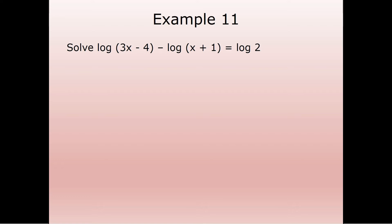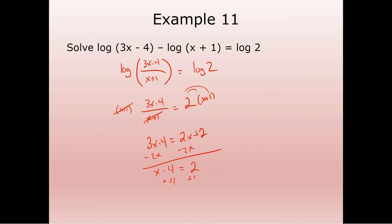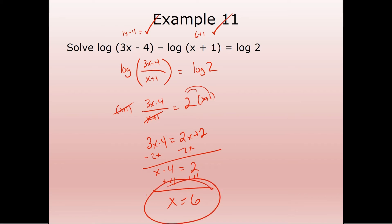Here we still have all logs, but three of them, so we need to rewrite this in terms of one single log. Since it's subtraction, that becomes division. Now we have log equals log, so we set argument equals argument and solve. Multiplying both sides by the denominator to clear the fraction: three X minus four equals two times X plus two. Distributing the two and subtracting two X: X minus four equals two. Add four: X equals six. Checking: three times six is 18 minus four — positive, fine. Six plus one is seven — fine. X equals six is the solution.